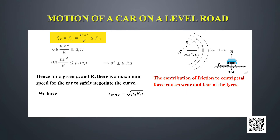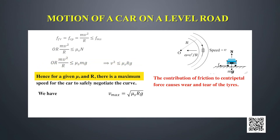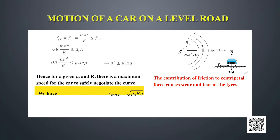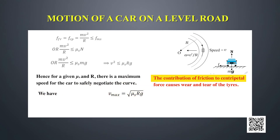The frictional force must be less than or equal to the maximum static friction: mv² / r ≤ μ_s · N = μ_s · mg. This implies v² ≤ μ_s · R · g. Hence, for a given coefficient of static friction, there is a maximum safe speed v_max = √(μ_s · R · g) for the car to safely negotiate the curve. However, friction contributing to centripetal force causes wear and tear of the tires.